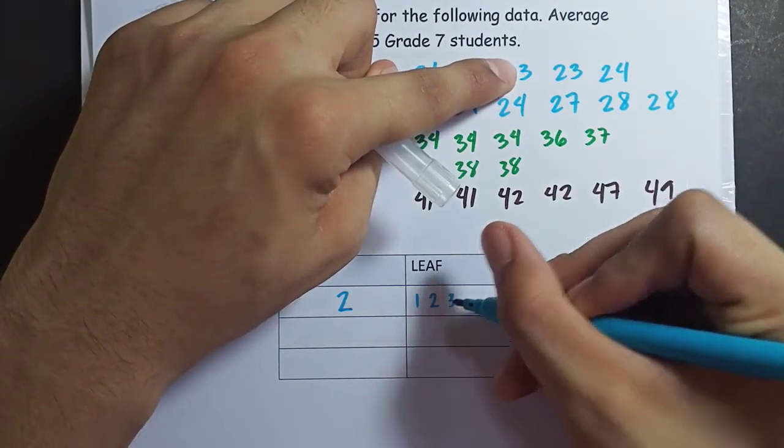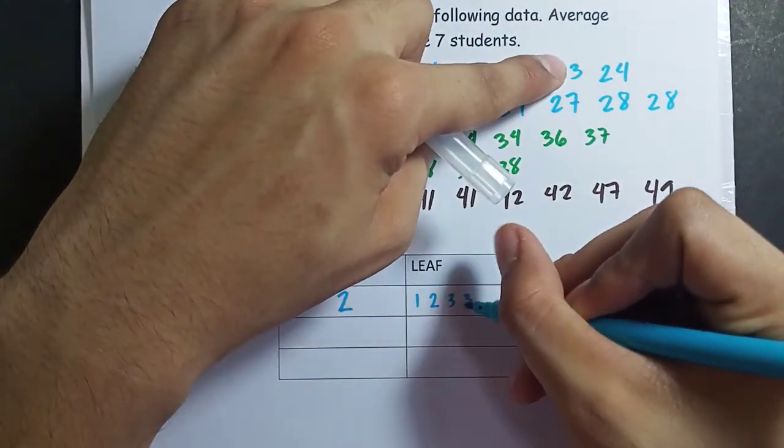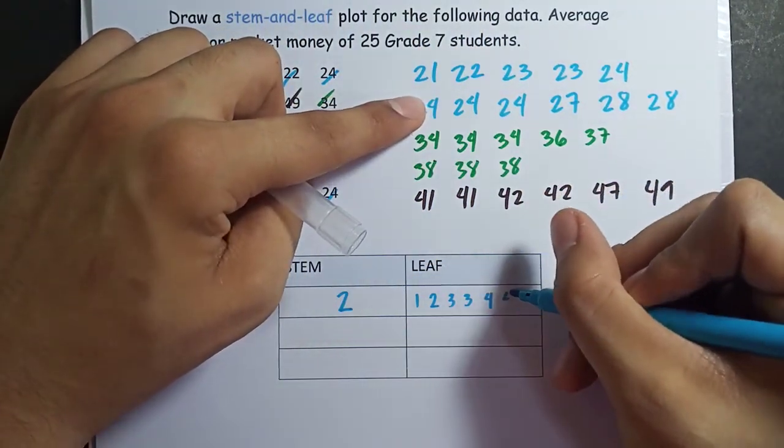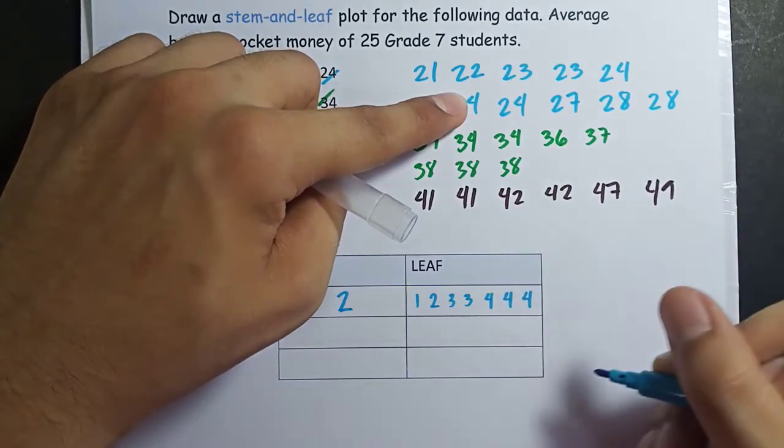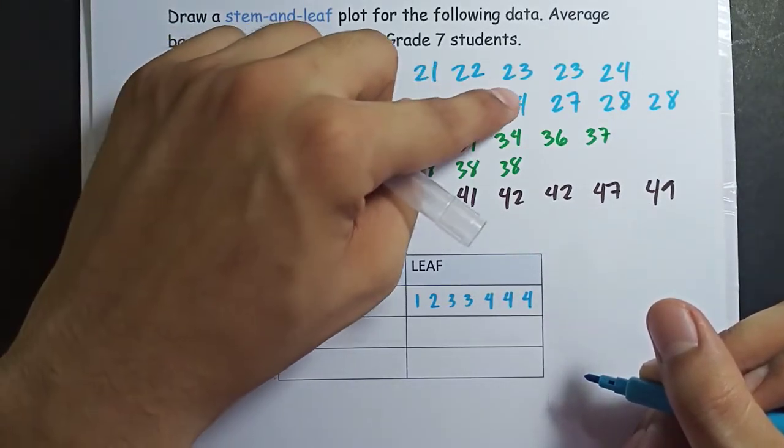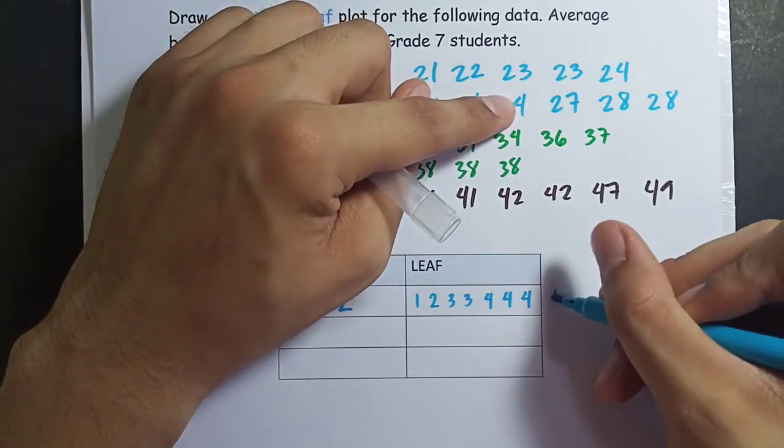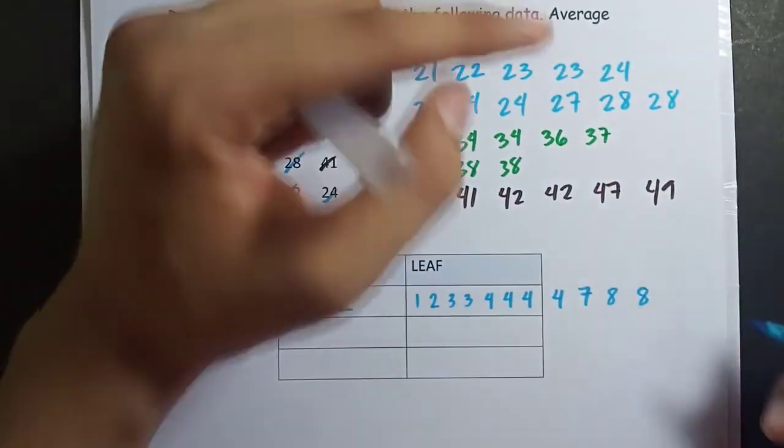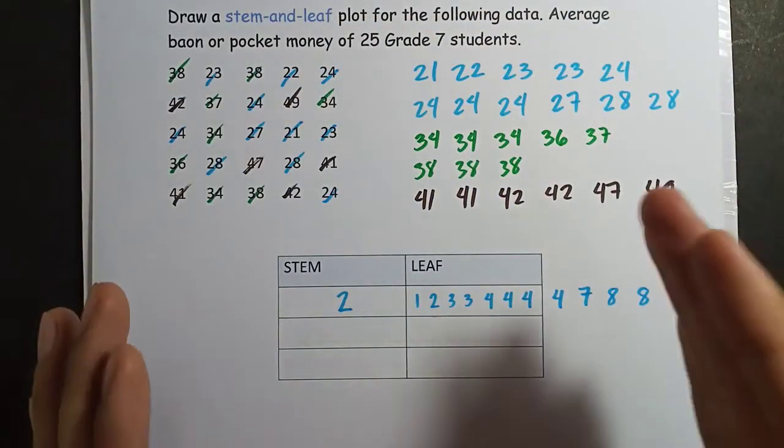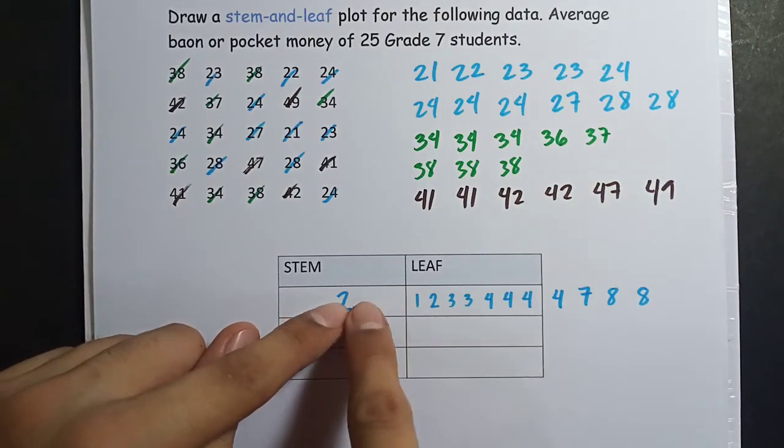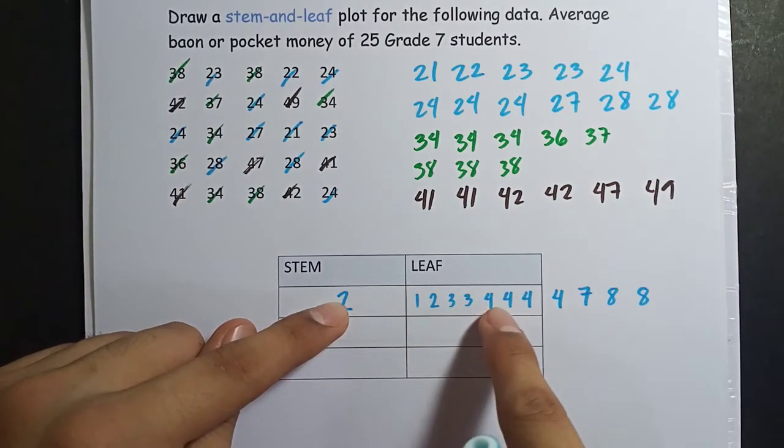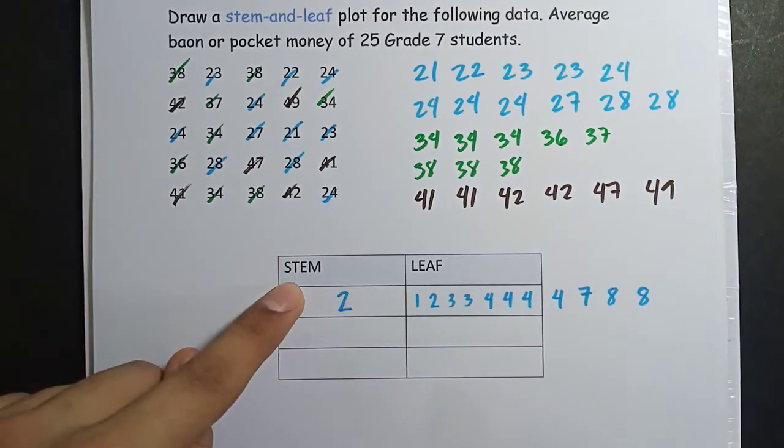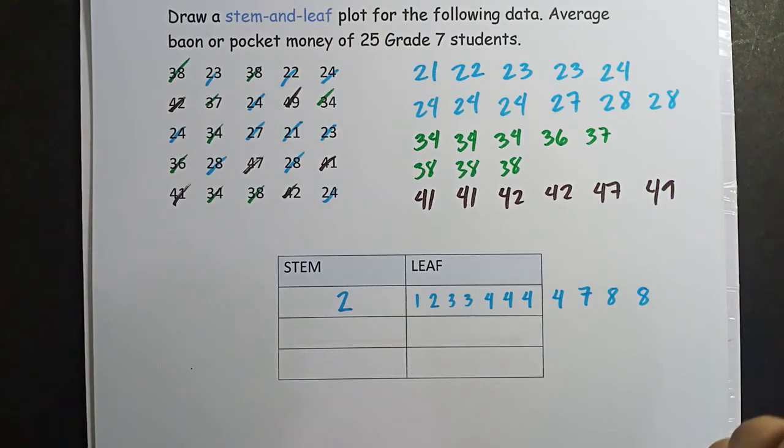2, 2 for 22. 2, 3 for 23. Another 3. 4, 4, 4, 4, 4. Let's count them. 7, 8, 8. So I've presented the data as stem and leaf. We have 21, 22, 23, 23, 24, 24, 24, 24, 27, 28, 28. This is the tens value, these are the ones values. That's the stem and leaf.